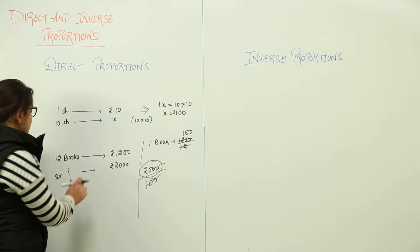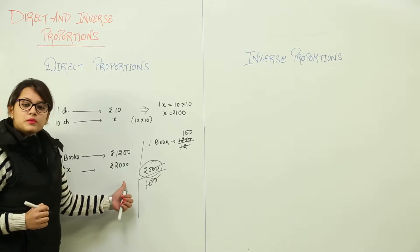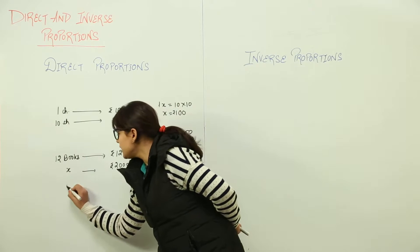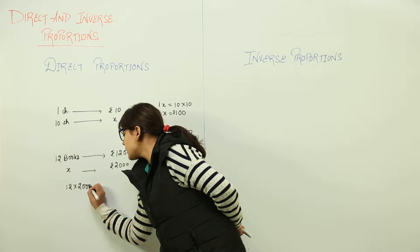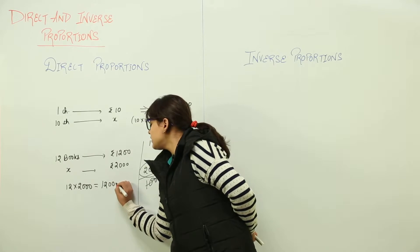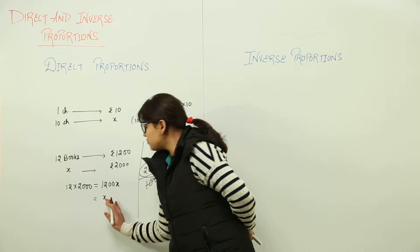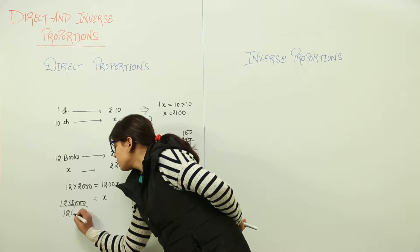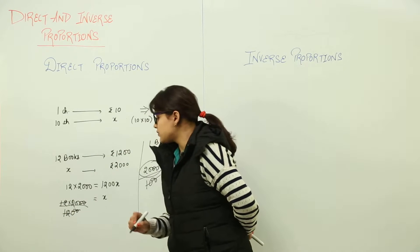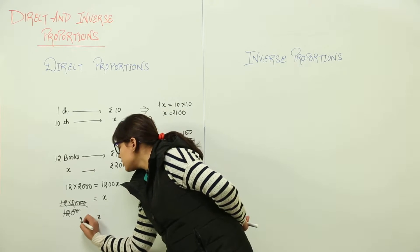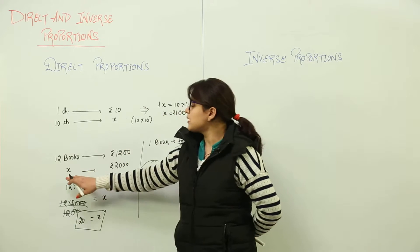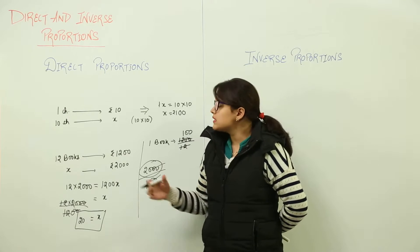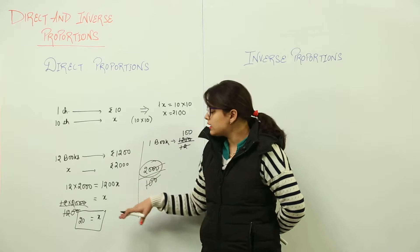Similarly, we assume the number of books to be bought for rupees 2000 to be x. Applying cross multiplication: 12 times 2000 on the left-hand side equals x times 1200, which is 1200x. Taking 1200 to the other side, it gets divided. Cancel the zeros and 12 cancels with 12, leaving x equal to 20. So 20 books can be bought for rupees 2000.